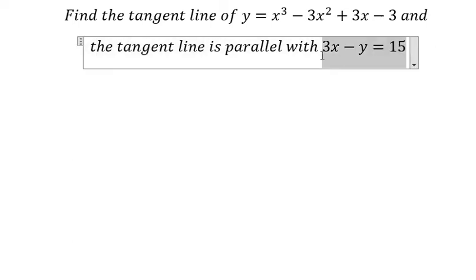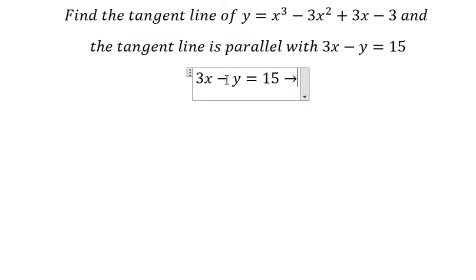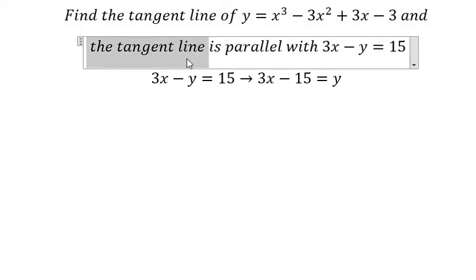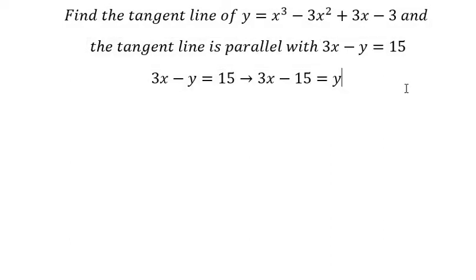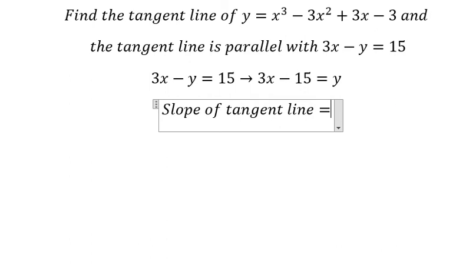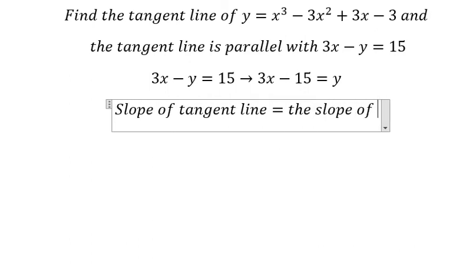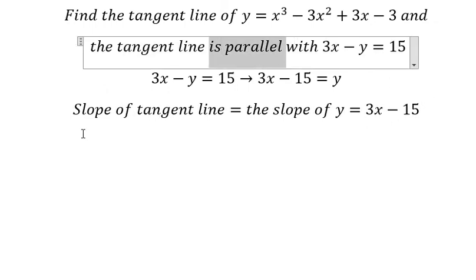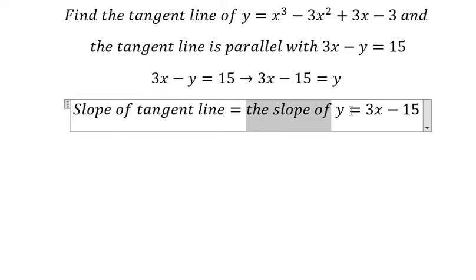First, we need to concentrate on this equation only. I will move negative y to the right and 15 to the left, so we have 3x minus 15 equals y. Because the tangent line is parallel with this one, the slope of the tangent line should equal the slope of y equals 3x minus 15. The slope of this line is 3.